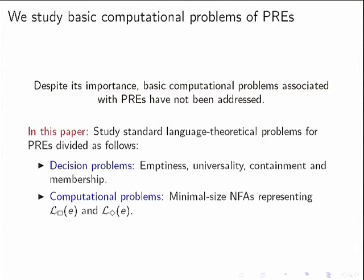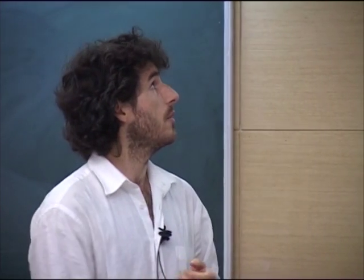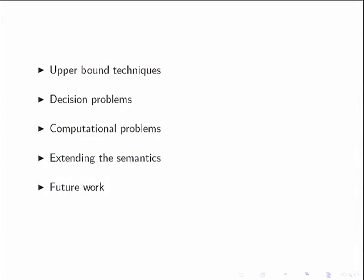In this paper we study the theoretical problems: the standard decision problems for formal languages — emptiness, universality, containment, and membership — and also how concise these representations are. Specifically, what would be the cost of converting a parameterized regular expression into an NFA?